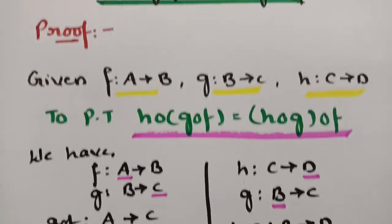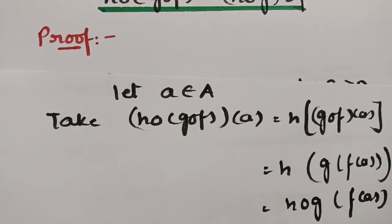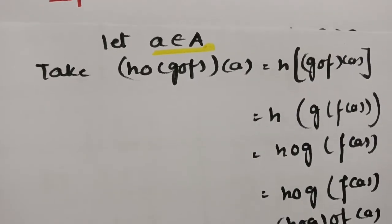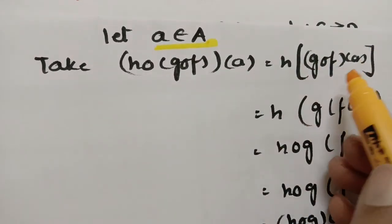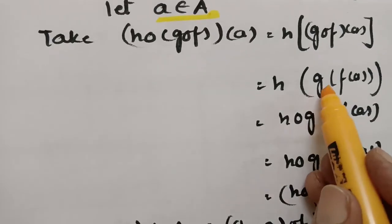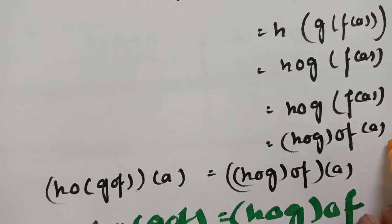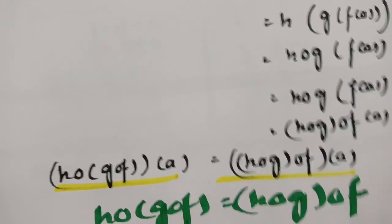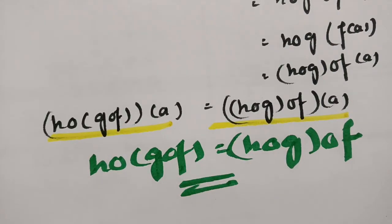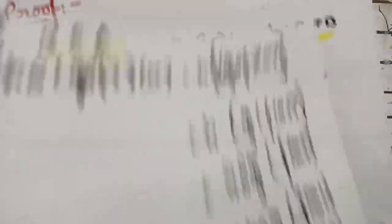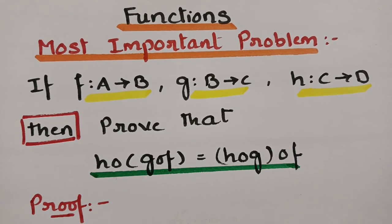Hence H∘(G∘F) and (H∘G)∘F have the same domain. Let small a belong to capital A. We take one element from the domain and start with the LHS. For the composition, we keep one bracket and internally another bracket: H∘(G∘F)(a) = H(G(F(a))) = (H∘G)(F(a)) = (H∘G)∘F(a). LHS equals RHS for every a in A, so both compositions are equal and hence it is proved.